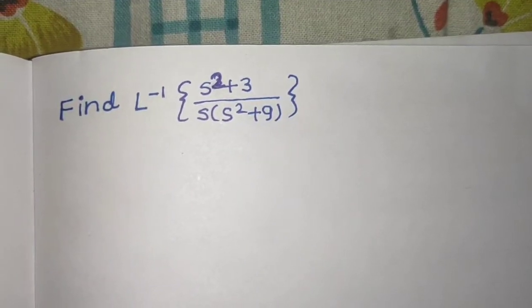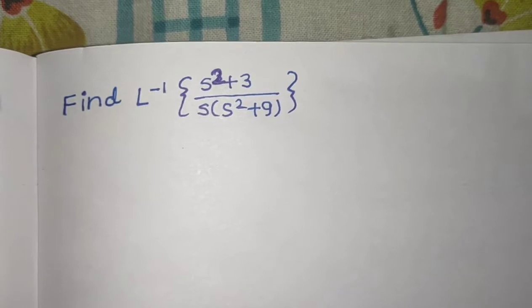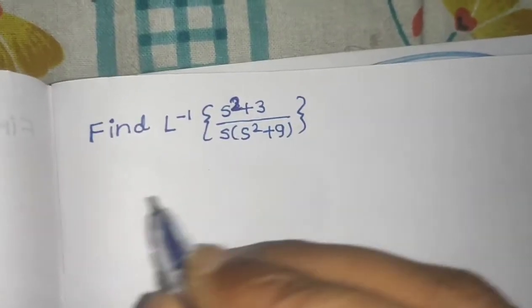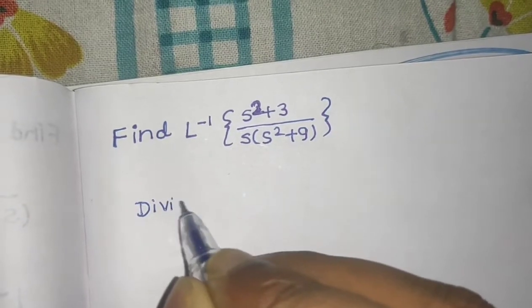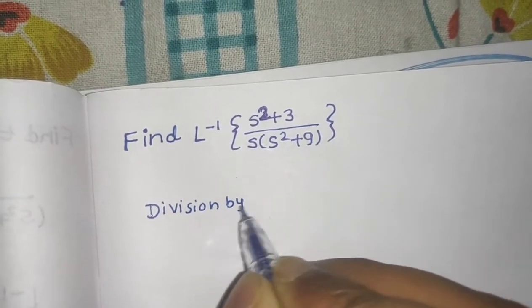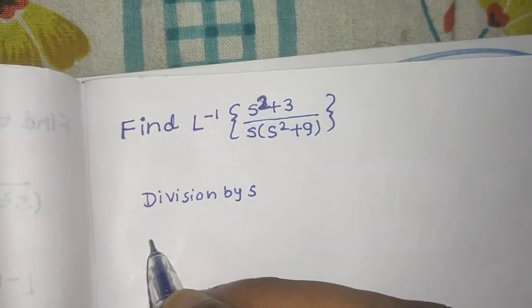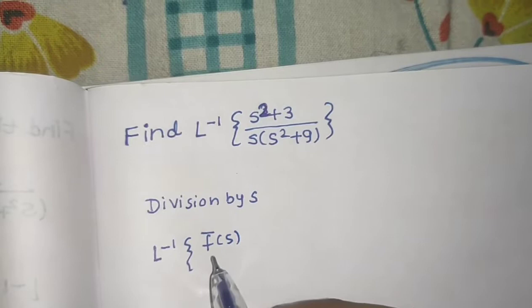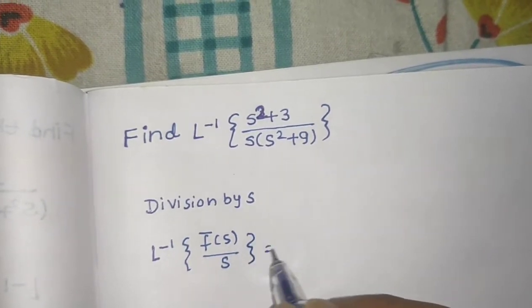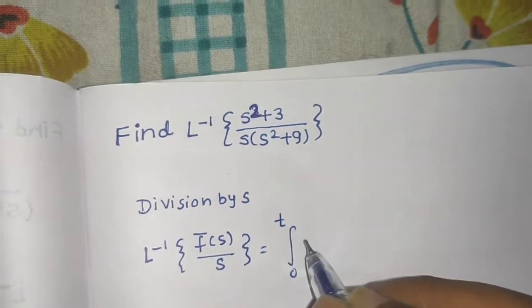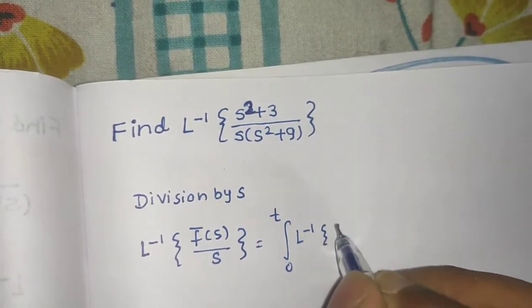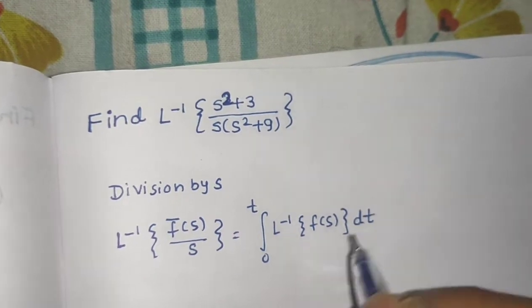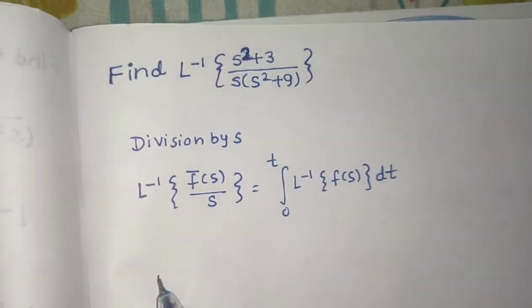Let's see one more problem from inverse Laplace transform: find the Laplace inverse of (s² + 3) divided by s times (s² + 9). Let's look at the concept of division by s, which says that if we need to find the Laplace inverse of F-bar(s) divided by s, then we simply integrate from 0 to t the Laplace inverse of F(s), integrating with respect to t.